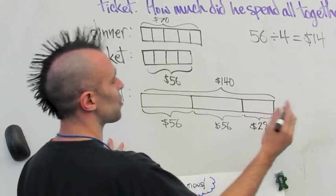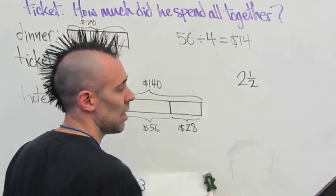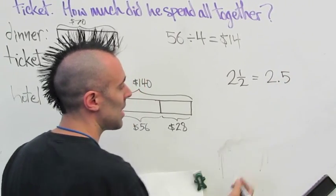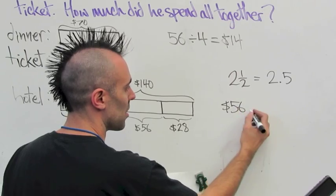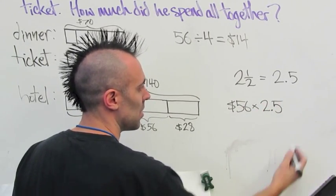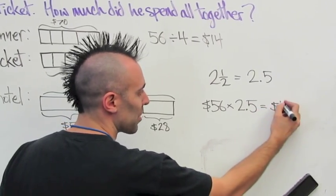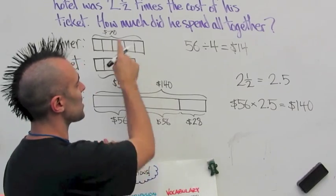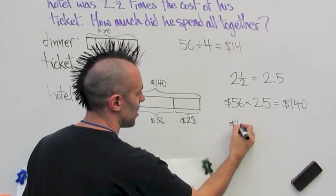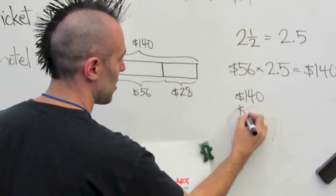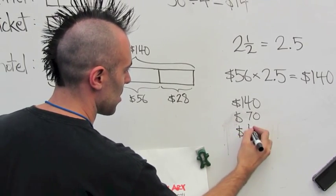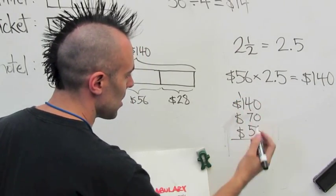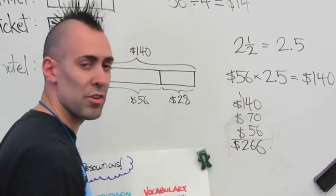Alternatively, I can change two and a half into the decimal two and five tenths, and multiplying $56 by 2.5 gives the same outcome: $140. Finally, adding up all amounts — the ticket, the dinner, and the hotel — that will be $56, $70, and $140, and the total amount he spent altogether is $266.